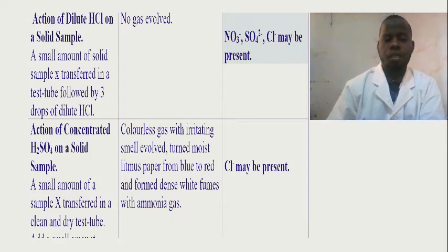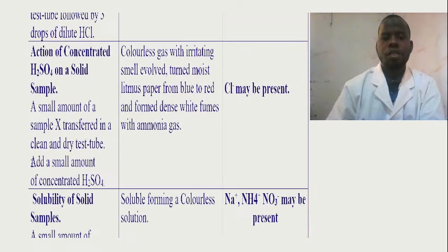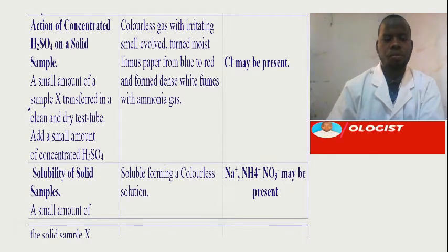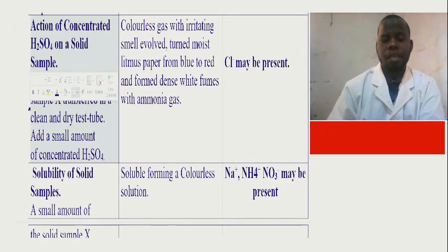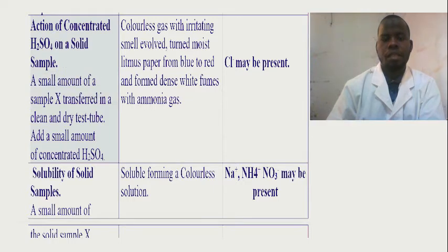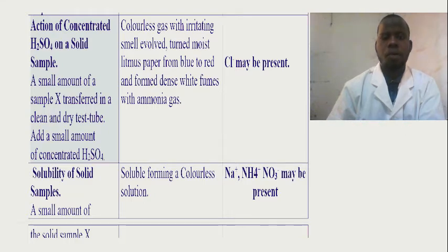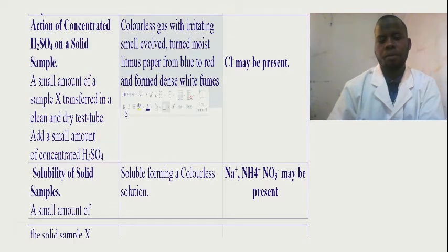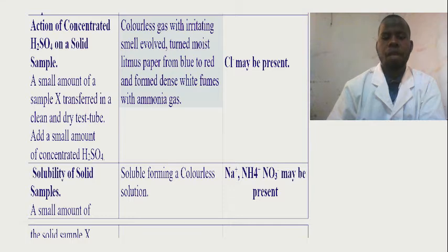Another action is the action of concentrated sulfuric acid on a solid sample. You have to transfer a small amount of sample X. Remember that you record this experiment in passive voice after performing the experiment — that is the report for your test. The observation: colorless gas with an irritating smell evolved, and turned moist litmus paper from blue to red, and formed dense white fumes.